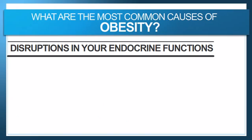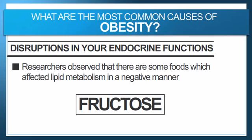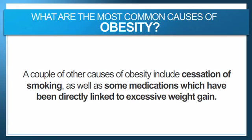Another cause of obesity is any type of disruption in your endocrine system. Researchers are actively exploring this and they've found some foods that actually affect your fat metabolism in a negative manner. One of these foods is fructose. Doctors have been evaluating fructose and it appears to have a very strong link between fructose consumption and fat or lipid accumulation. If you can reduce the amount of fructose in your diet, that can be helpful according to early research. It's not yet definitive, but this is promising early research. There are also other causes of obesity that are less powerful.